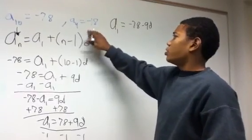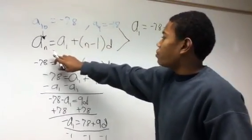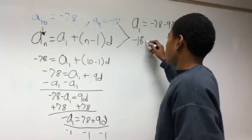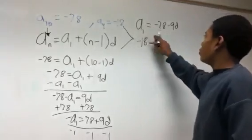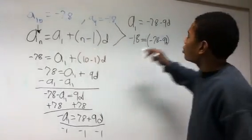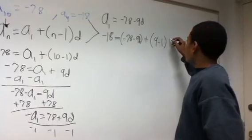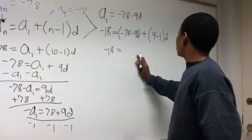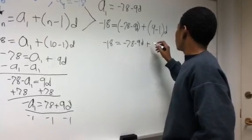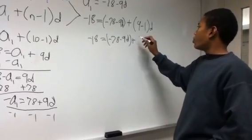We can plug this back into the equation using our other known value: a sub 4 equals negative 18. Substituting into the formula, negative 18 equals the quantity of negative 78 minus 9d, plus the quantity of 4 minus 1 times d. So negative 18 equals negative 78 minus 9d plus 3d.